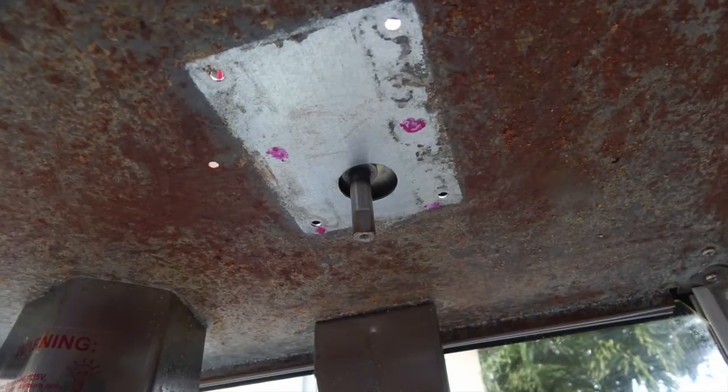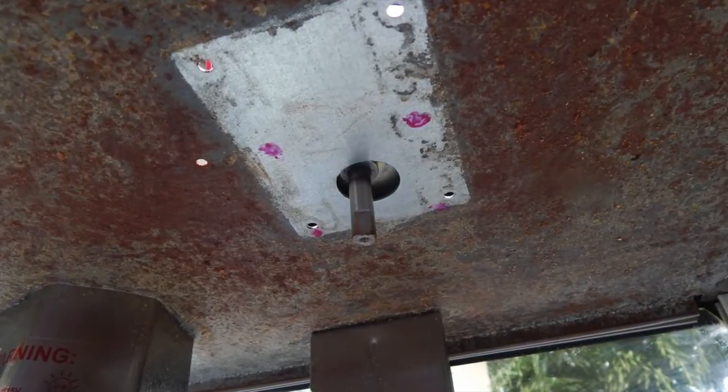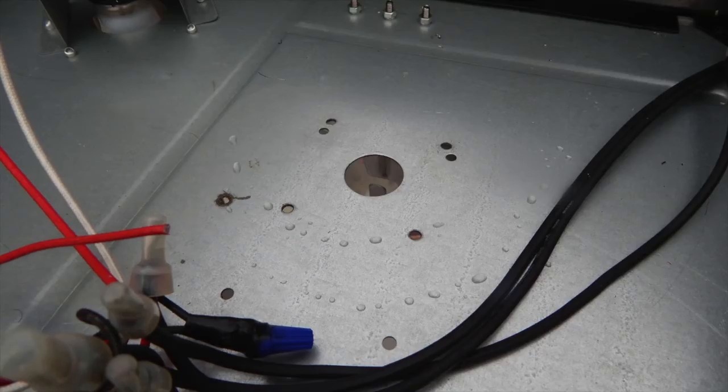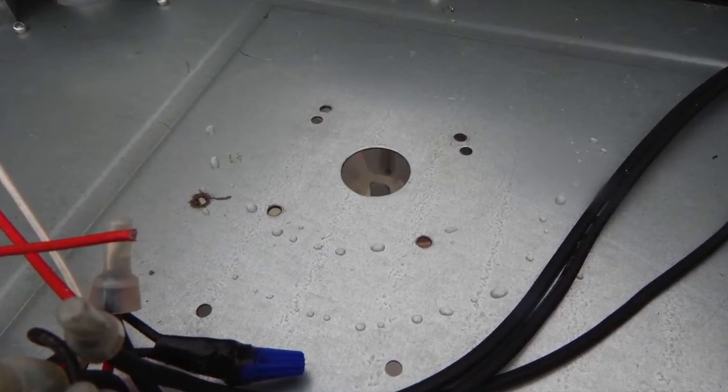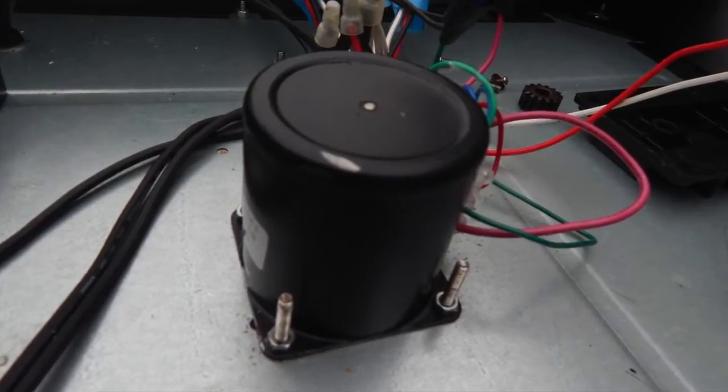Then remove your kettle sprocket and motor. Now you're ready for drilling. Now mount your synchronous motor to the top of the machine.